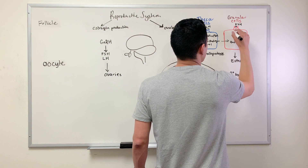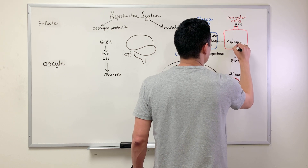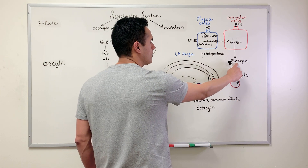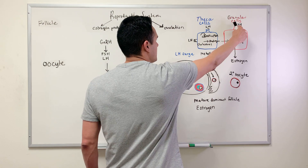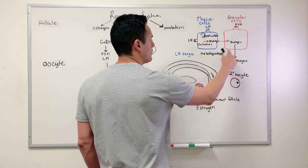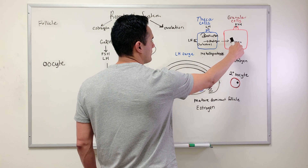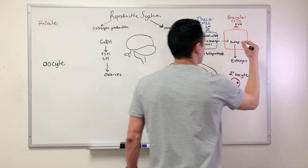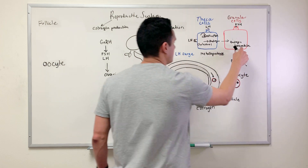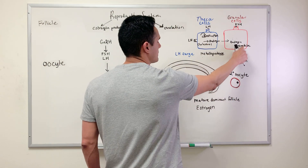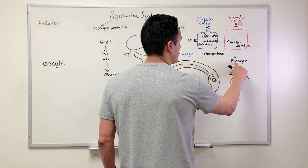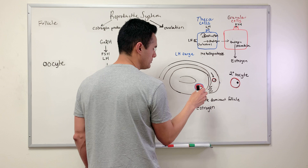This androgen diffuses into the granular cell, where we can synthesize estrogen. For this to happen, FSH must bind to the granular cell. The reason estrogen is synthesized here is because the granular cell contains an enzyme known as aromatase, which the theca cells do not contain.